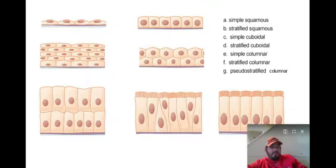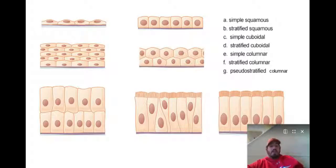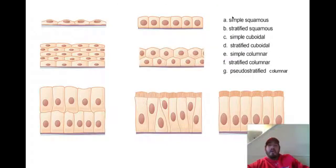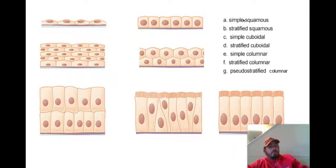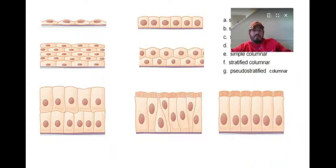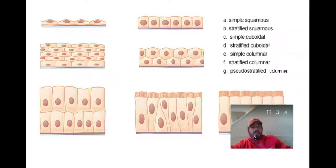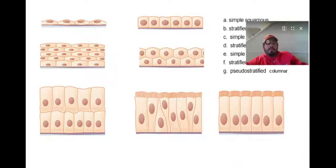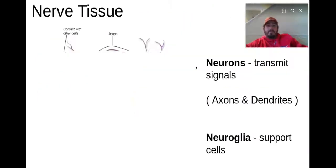I want you to actually take a screenshot here and label the different types shown. These are your choices. Label each one — is this stratified cuboidal? Is this simple squamous? When we get into class, we'll go over these and see how you did. Take a screenshot if you haven't already, and then go label those.